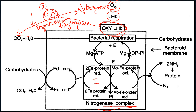Component one of the nitrogenase complex always makes the conversion possible. Component two is an accessory component that attaches to component one and converts ATP to ADP, producing energy. Component two is also called azoferredoxin and consists of an iron protein — it acts as a reductase, also called nitrogenase reductase enzyme.